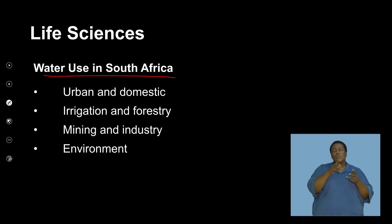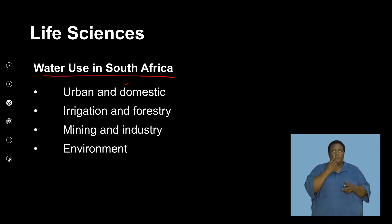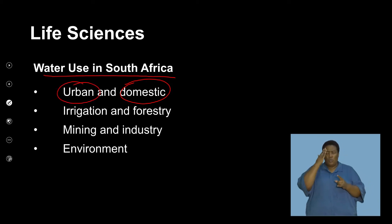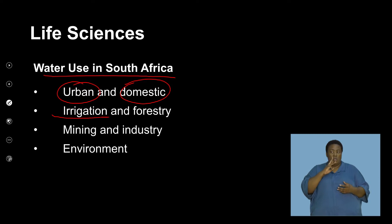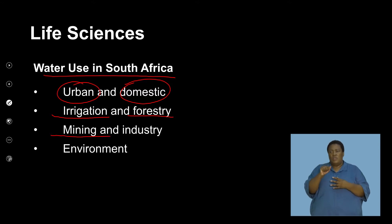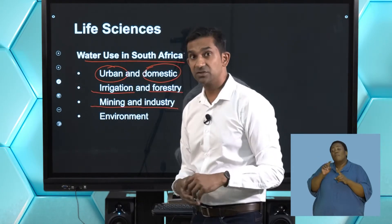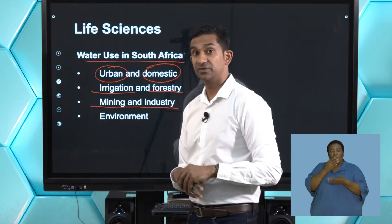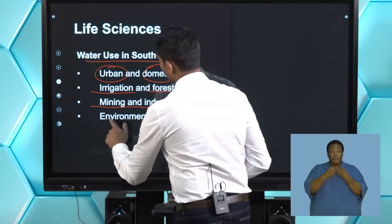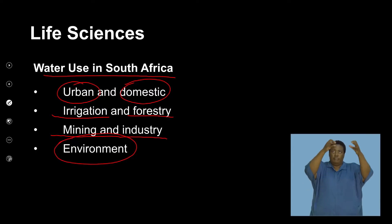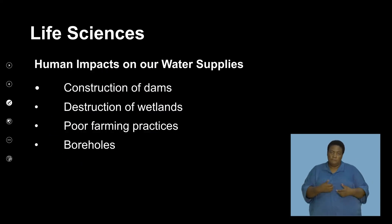Where is water used in South Africa? Our major consumers include domestic use in our homes, urban use, agriculture — South Africa relies heavily on irrigation and forestry — and industry. Mining uses a huge amount of water, all from that accessible 1% we can actually consume. Water is also lost to natural processes such as evaporation and precipitation.